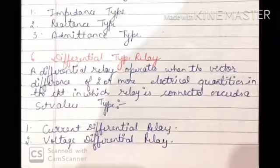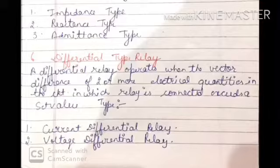I hope you understand the classification of protective relays. There are a total of 6 types: electromagnetic attraction type, induction type, directional type, timing-based, distance-based, and differential type. All relays nowadays are electro-mechanical type and they work on two principles: electromagnetic attraction and electromagnetic induction. If you have any doubts regarding the classification of protective relays, please do ask me. Thank you.